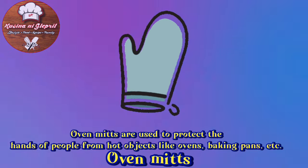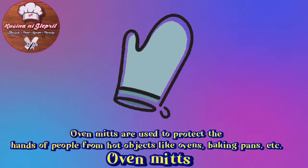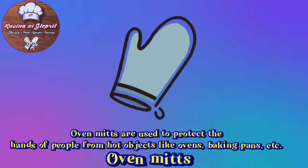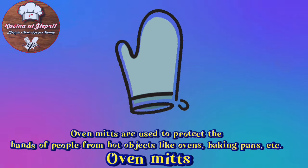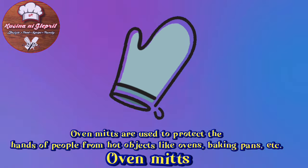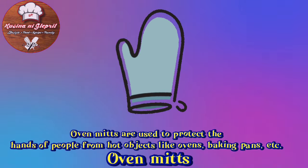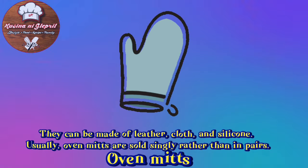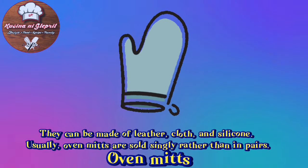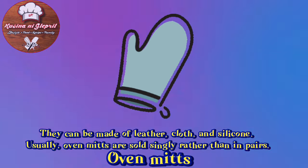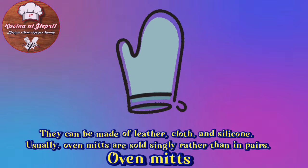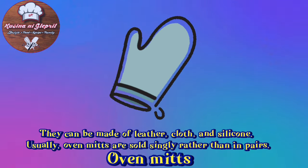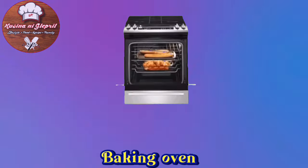Oven Mitts: Oven mitts are used to protect the hands of people from hot objects like ovens, baking pans, etc. They can be made of leather, cloth, and silicone. Usually, oven mitts are sold singly rather than in pairs.